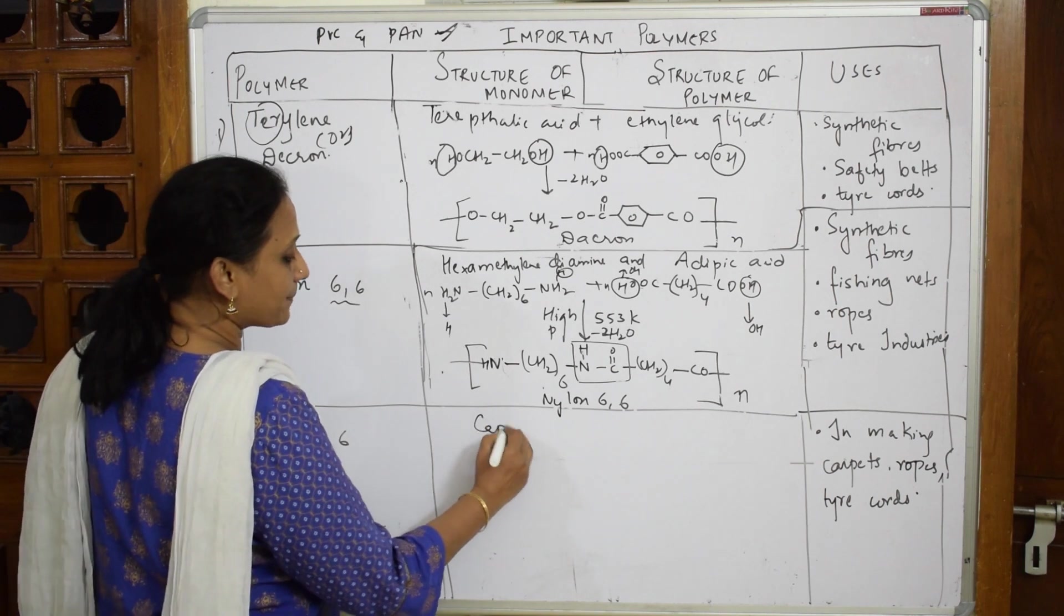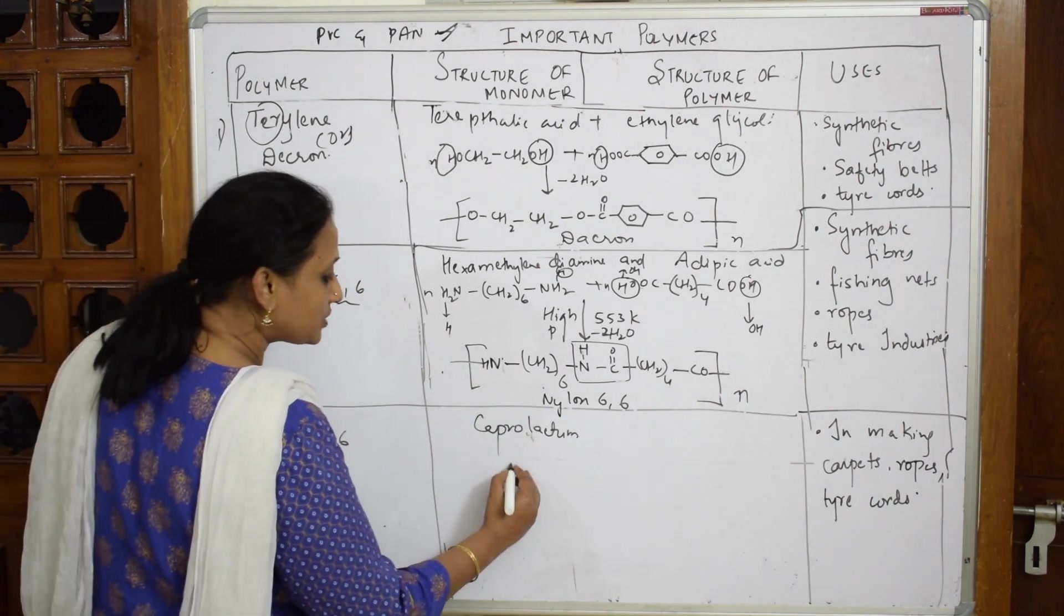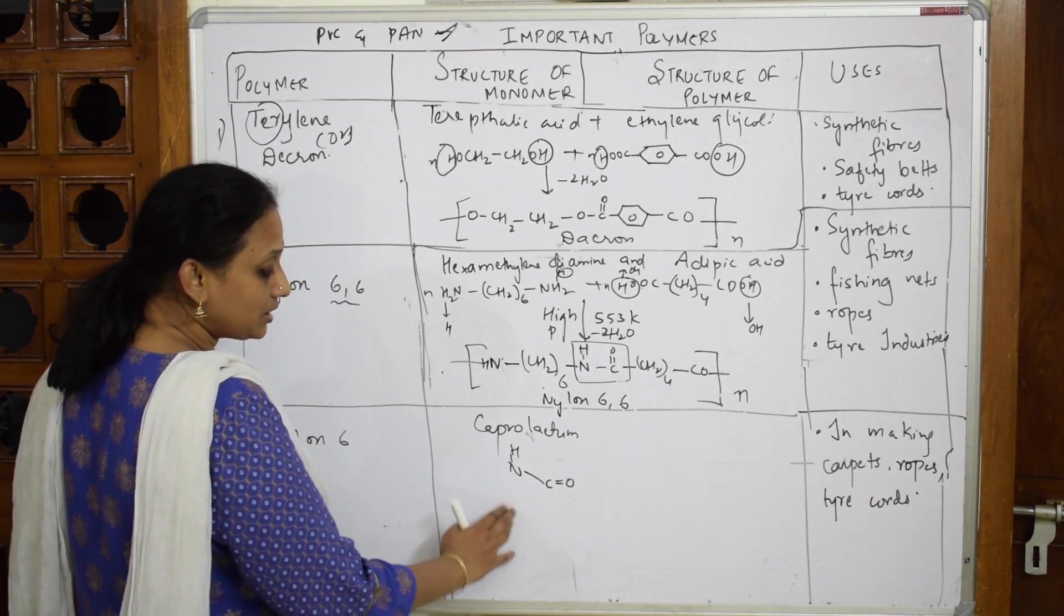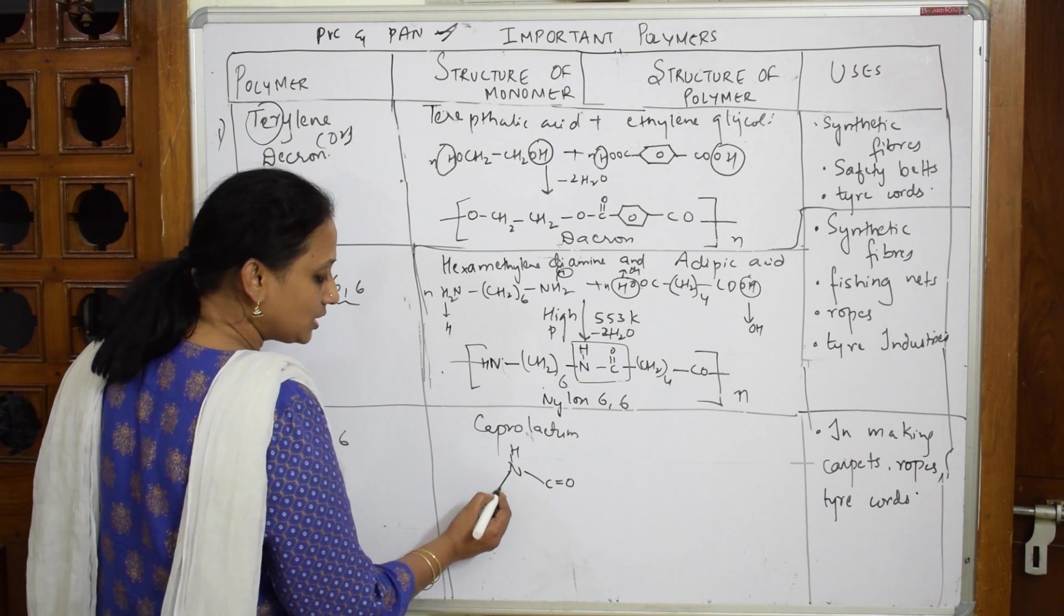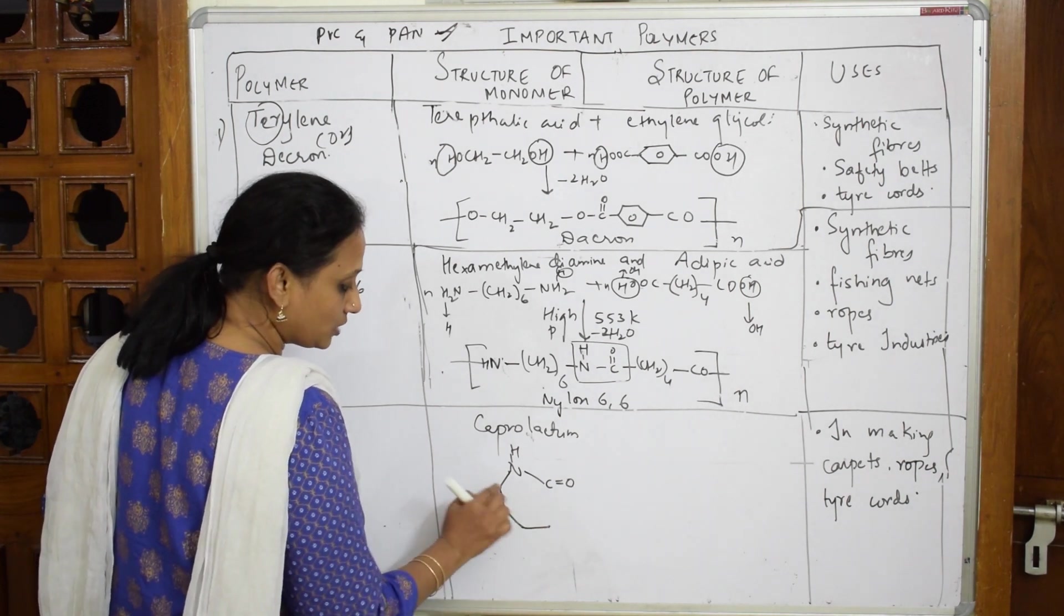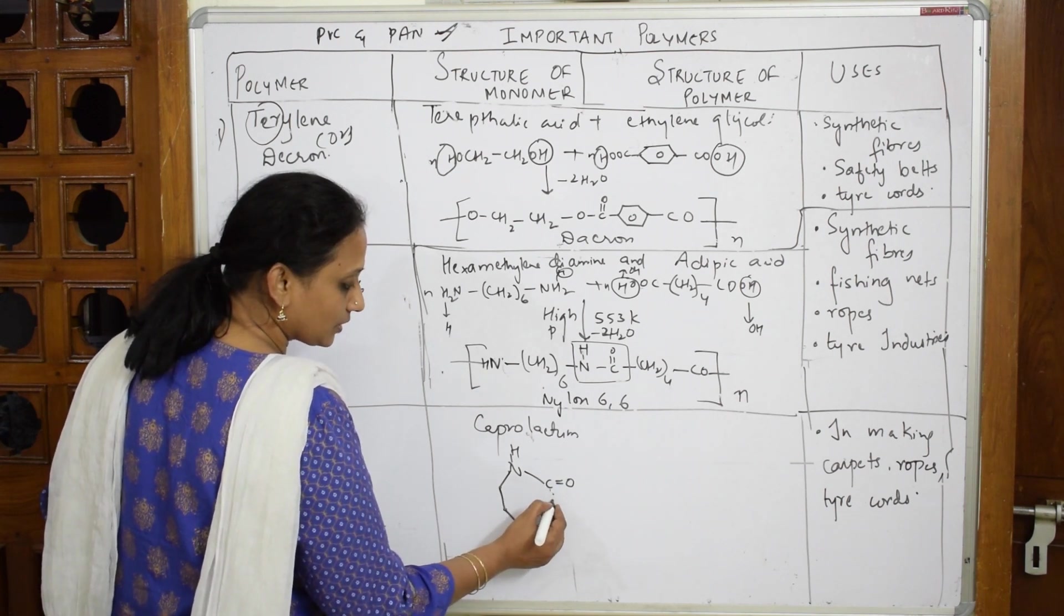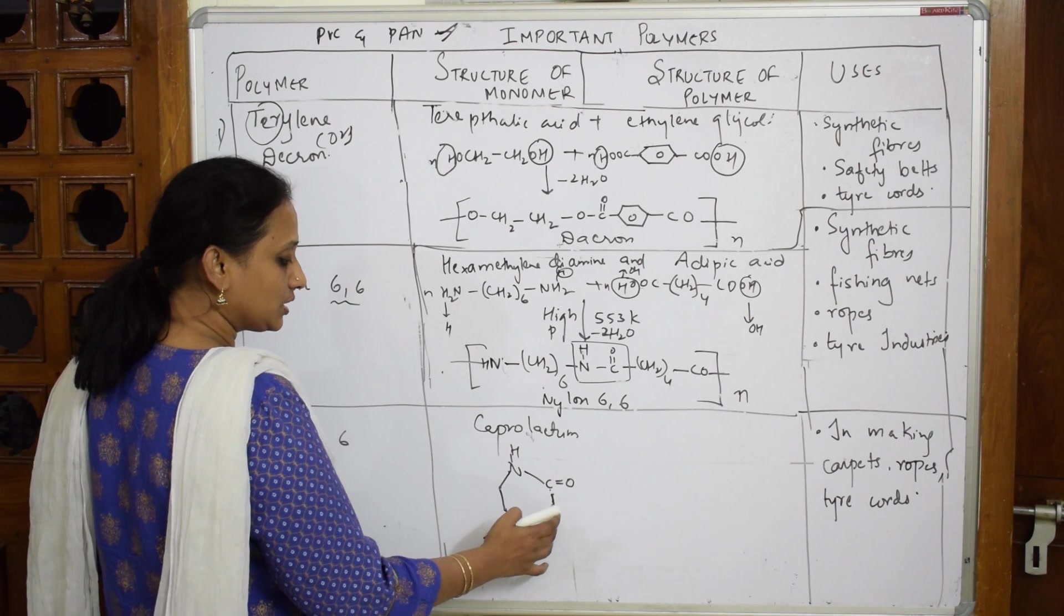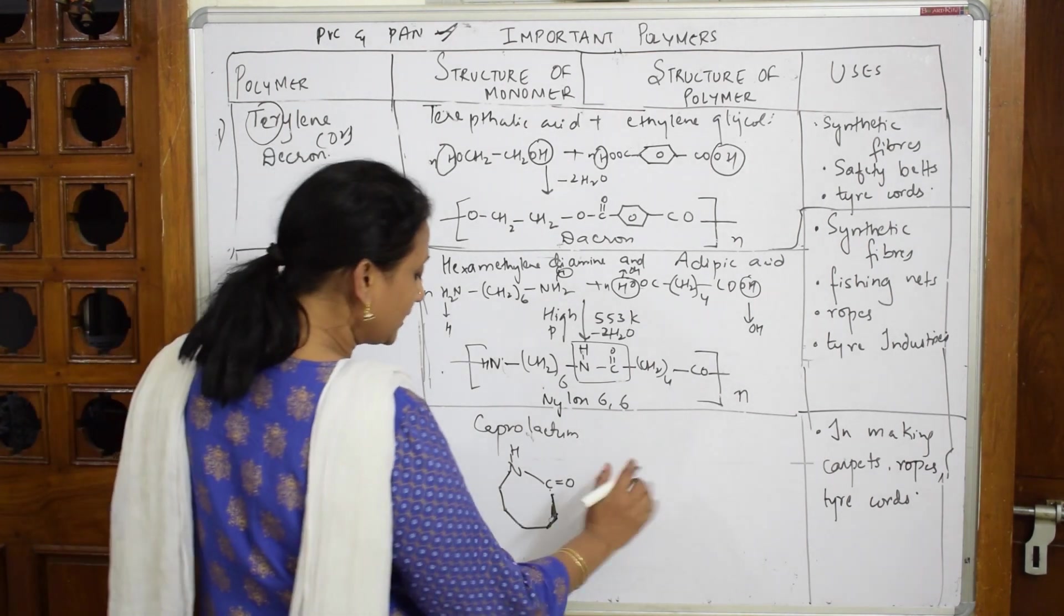Let's come back and write for Nylon 6 now. So Nylon 6, the monomeric unit is caprolactam. Caprolactam is simple - it is a cyclic chain. How should you write it? First write NH on one end, then join this with C double bond O. Now from here you have to remember there are five carbon atoms. One, two, three, four, and the fifth one.